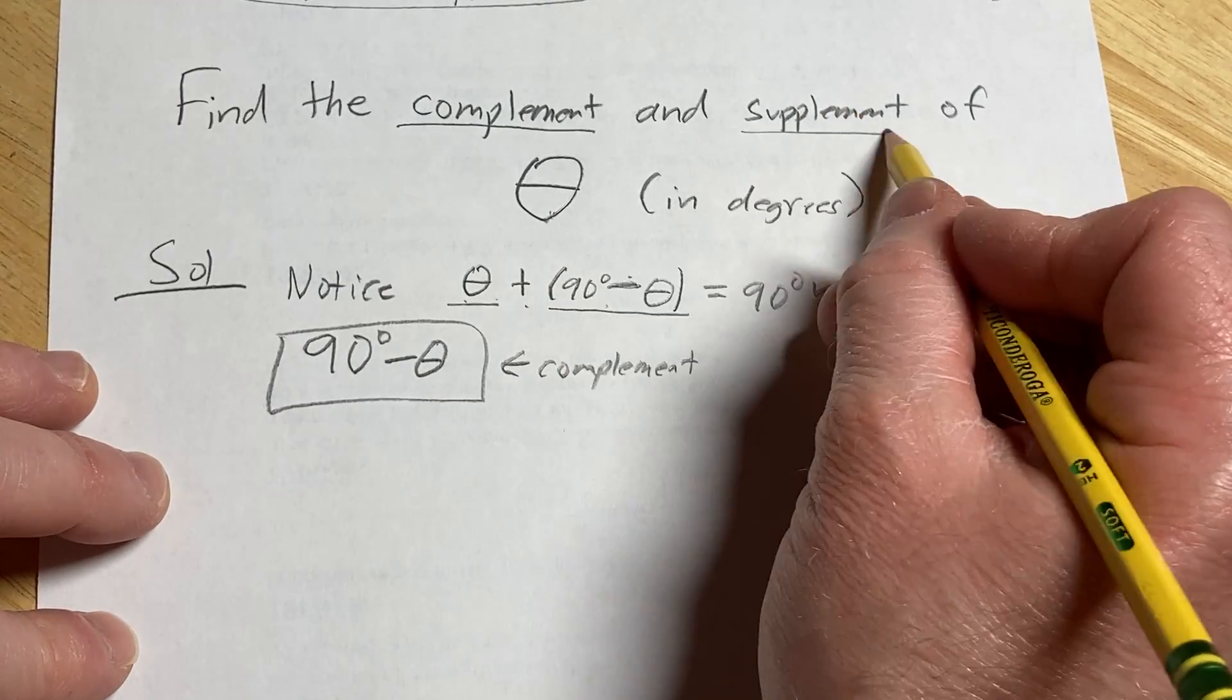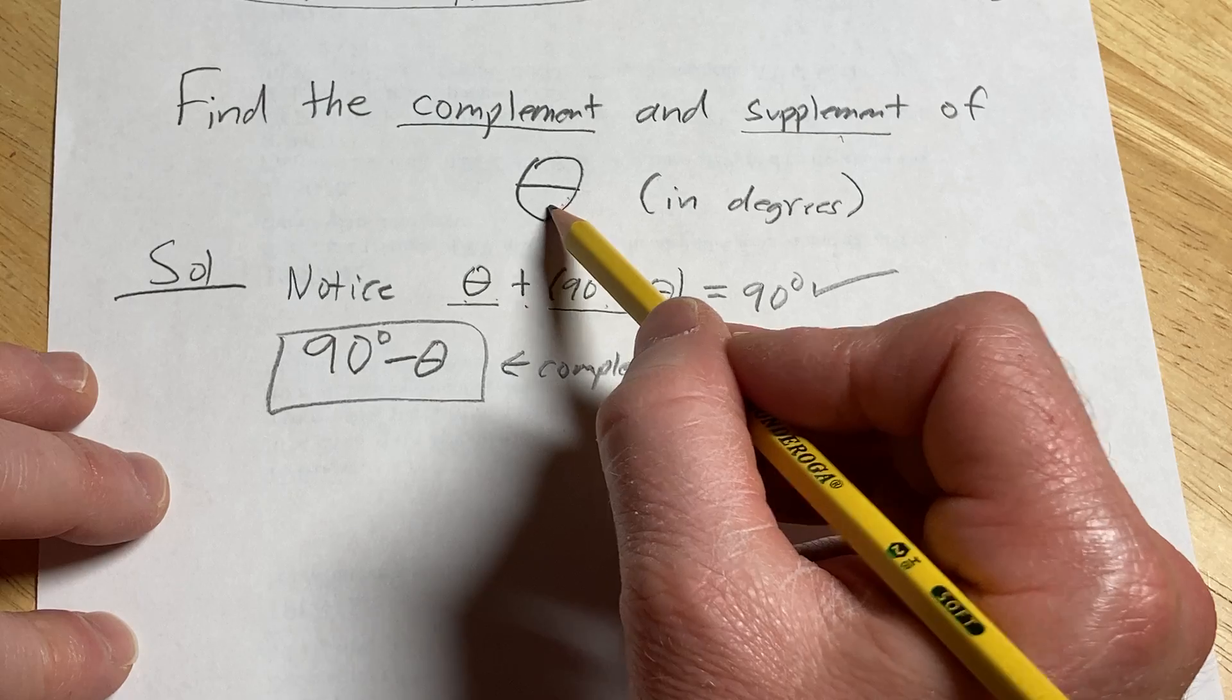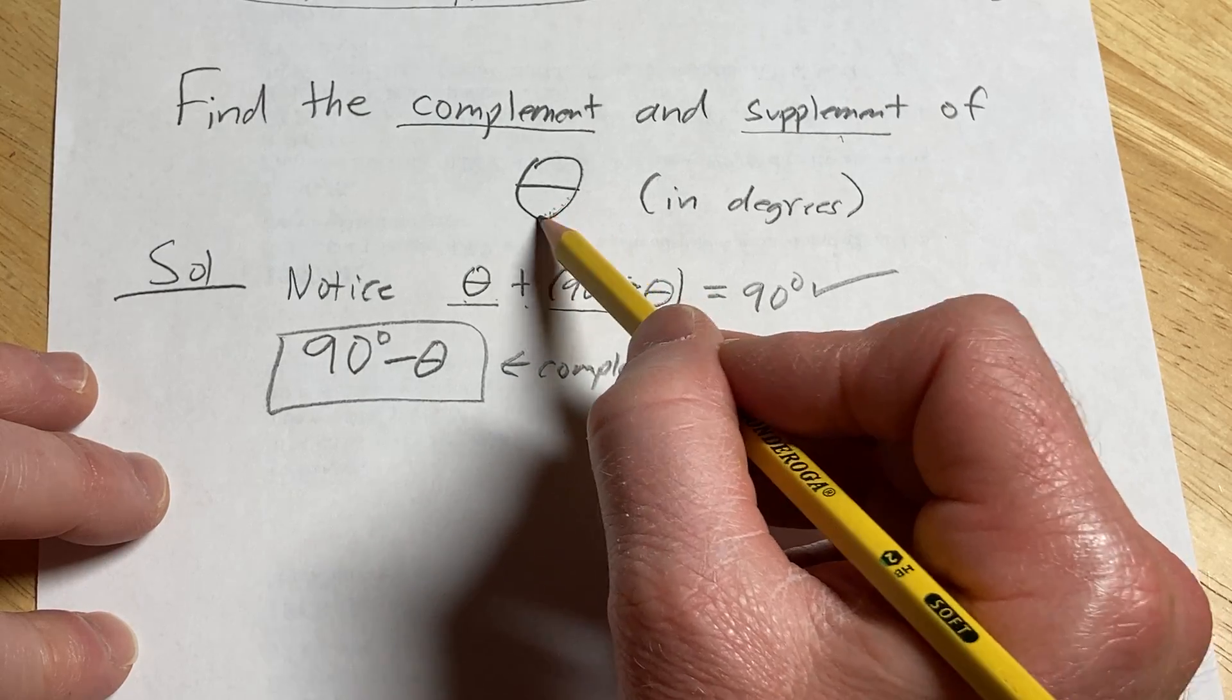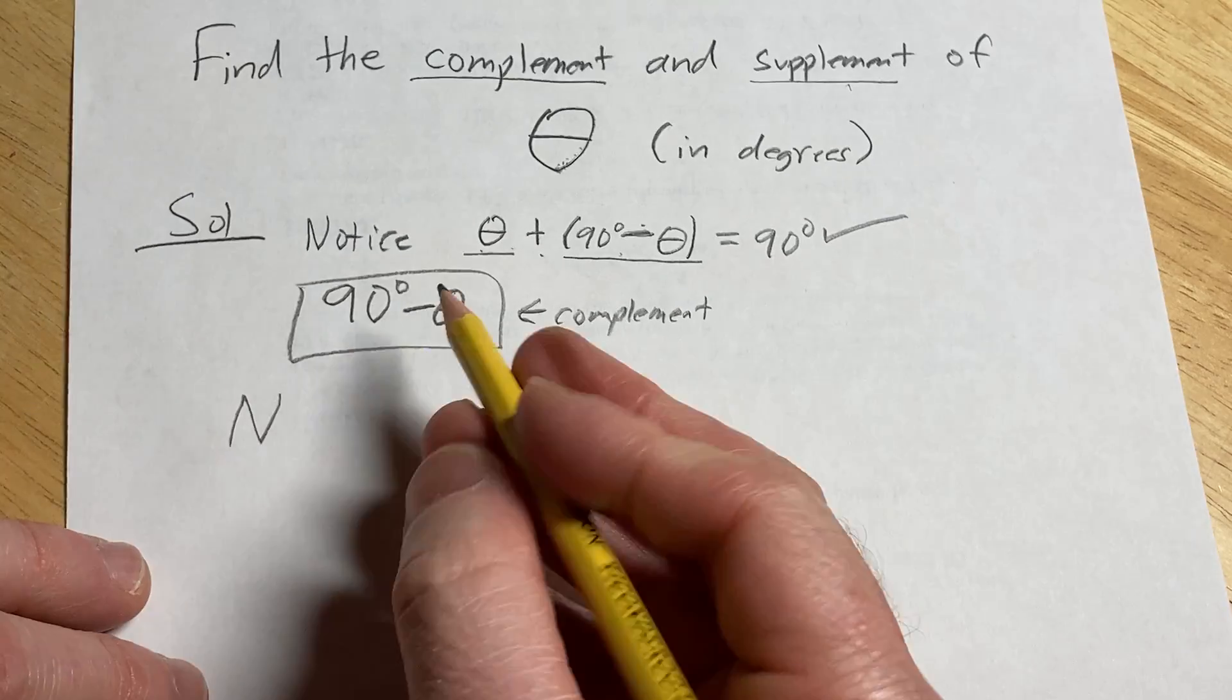Now let's work on the supplement. The supplement of theta is the angle we add to theta that's going to give us 180 degrees. In a similar fashion,